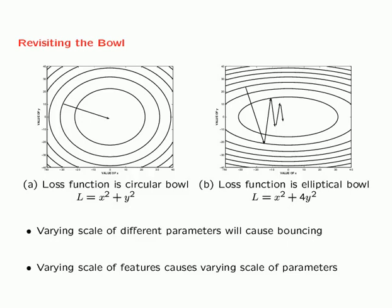Typically, if there is varying scale of different features, it causes varying scale of the parameters. The reason we perform normalization of the inputs is to avoid varying scale of the features. Batch normalization generalizes this concept — it normalizes not only the input features, but also the features in each layer. This principle is carried through to all layers to ensure more stable behavior and faster convergence of the underlying algorithm.